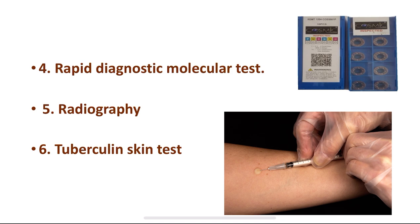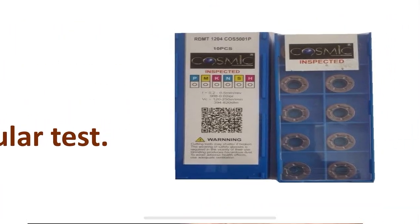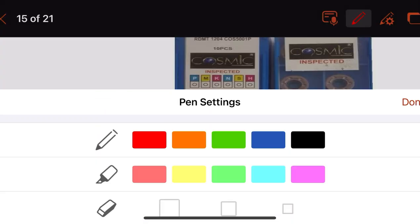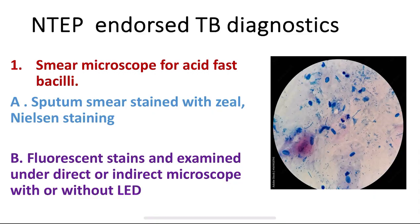Third is the rapid diagnostic molecular test: conventional PCR-based line probe assay for MTB complex, or real-time PCR-based nucleic acid amplification test for MTB complex. Fourth, where available, is radiography. Fifth is the tuberculin skin test. These are the diagnostics included in the NTEP.